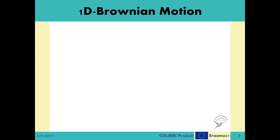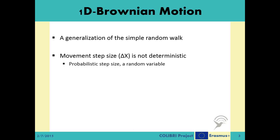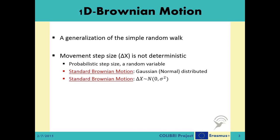So what happens if the size of a single step is not the same? A Brownian motion can be called a generalization of a simple random walk process, in which the step size can come from any random distribution. It has been widely accepted in the literature that, in order to capture the real diffusion dynamics, a Gaussian random variable is a good selection for the step size random variable. This is called the standard Brownian motion, or the Wiener process.